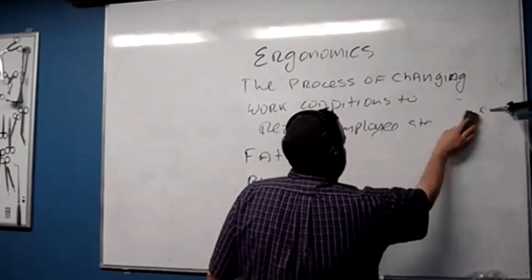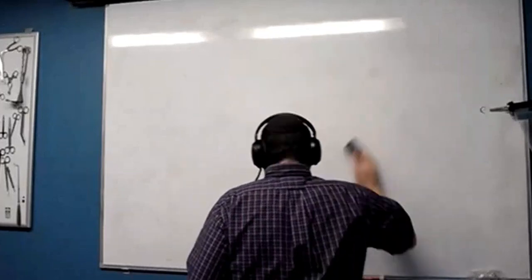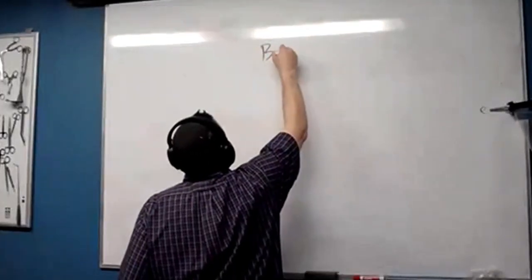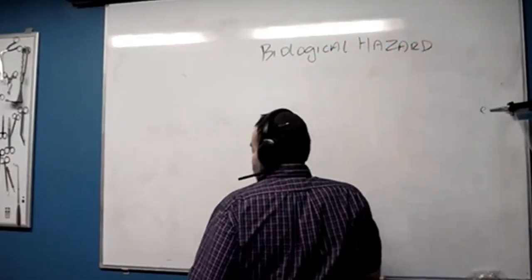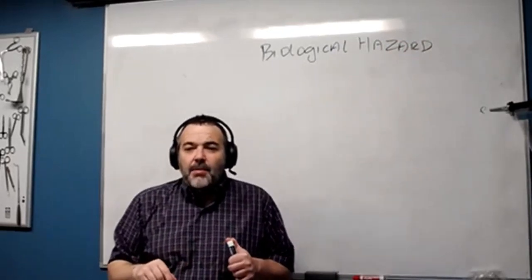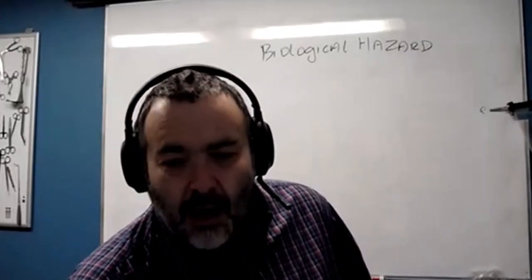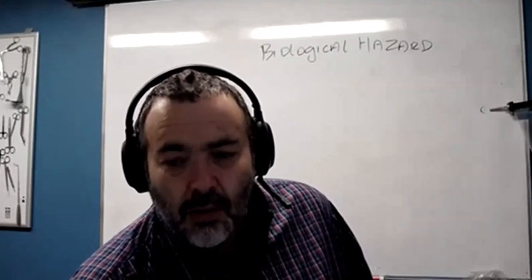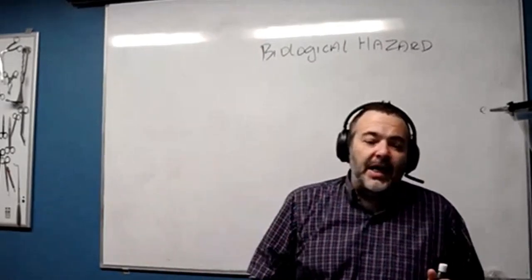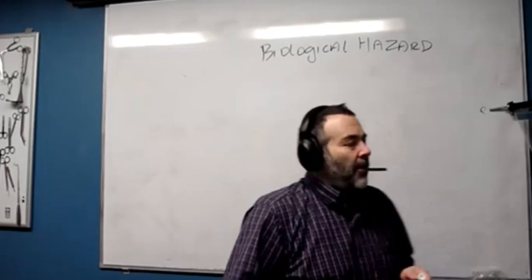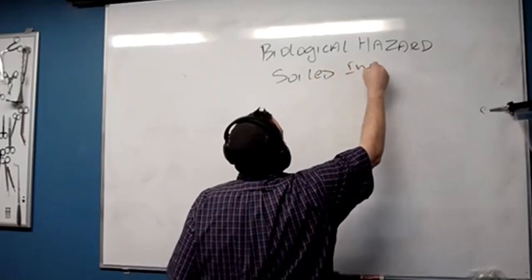Let's talk about biological hazard. As the name implies, biological hazard revolves around biological entities that can harm us in the workplace. What exactly are the biological hazards? They would be dirty instruments or patient care equipment. When we talk about biological hazards, we're talking about soiled instruments.